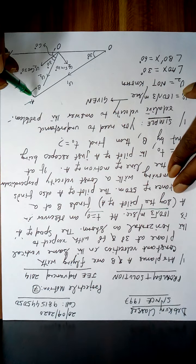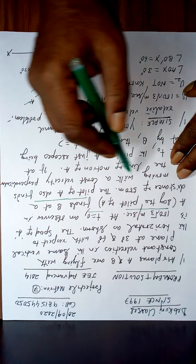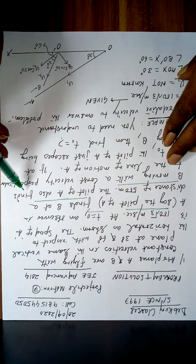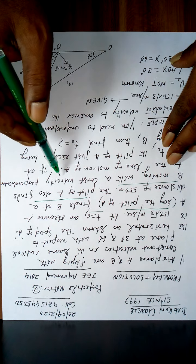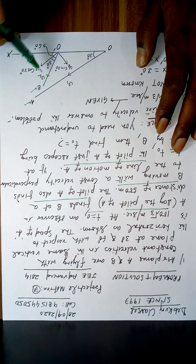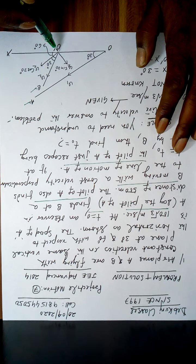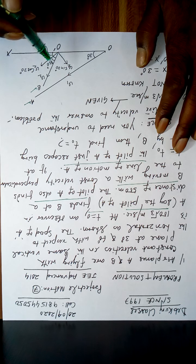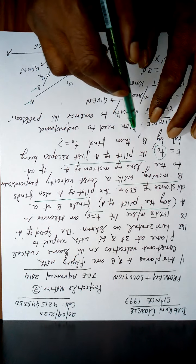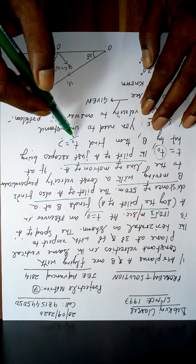An observer in A — say the pilot of A — finds B at a distance of 500 meters. The pilot of A also finds B moving with a constant velocity perpendicular to the line of motion of A. But A finds B is actually travelling in a different direction, and A perceives B as moving perpendicular to it. If at t = t0 the pilot of A just escapes being hit by B, find the time t0.